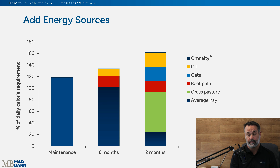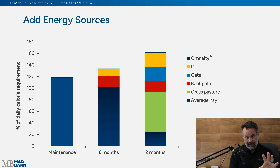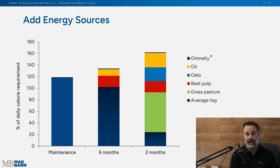We have two extremes: the six-month slower route or the two-month quicker route. At maintenance, if we just have hay, we have gaps in minerals and vitamins that we need to address with a vitamin-mineral mix. For the slower approach over six months, we can very easily add some oil and beet pulp — which is highly fermentable in the hindgut — as a good carrier for the oil, plus a vitamin-mineral mix like Omnity.